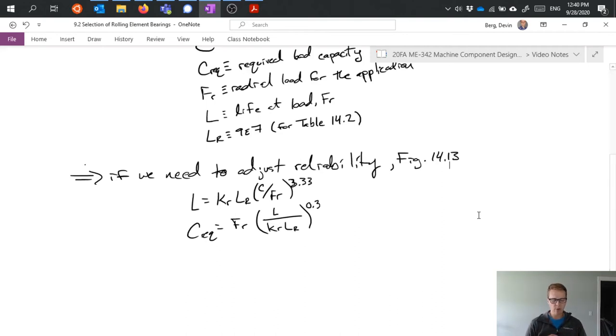We could also make a correction for shock loading. If we expect there to be a suddenly applied load to the bearing, we might need to make a correction for that, in which case we can introduce an application factor. This application factor would be multiplied by F sub R for any shock that we might see, and that again comes from a table we can read from the textbook.